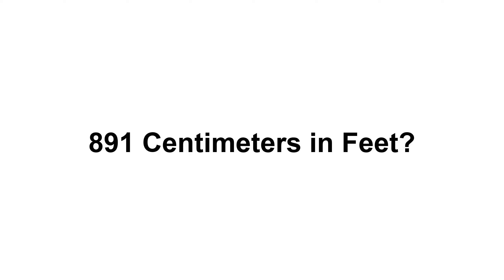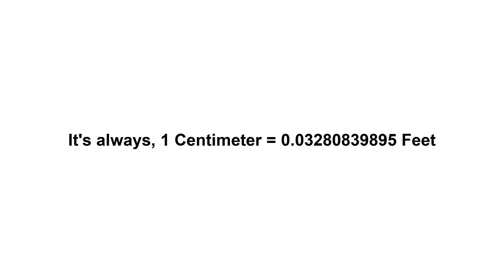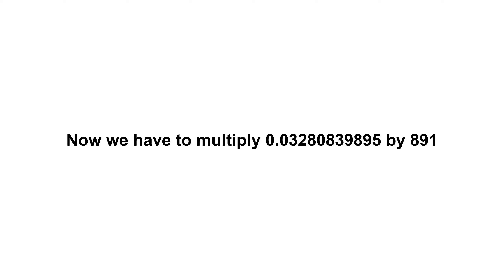Eight hundred and ninety one centimeters in feet. First of all, we need to know the value of one centimeter in feet. It's always one centimeter equals zero point zero three two eight zero eight three nine eight nine five feet. Now we have to multiply zero point zero three two eight zero eight three nine eight nine five by